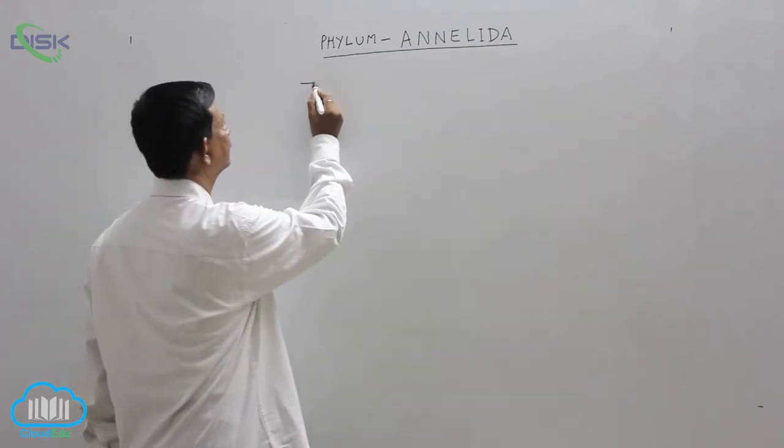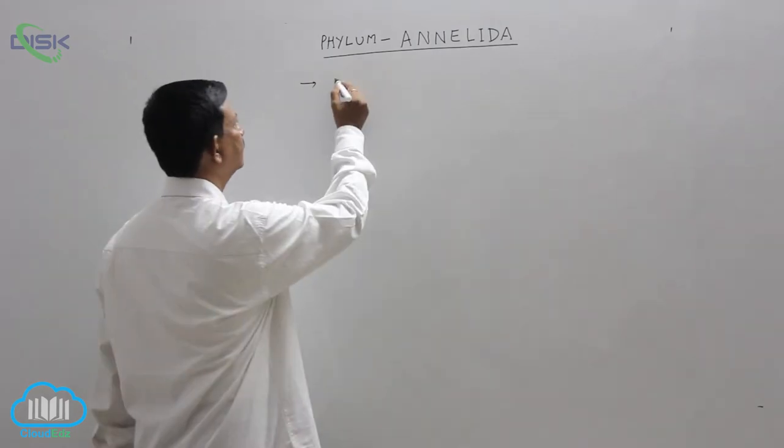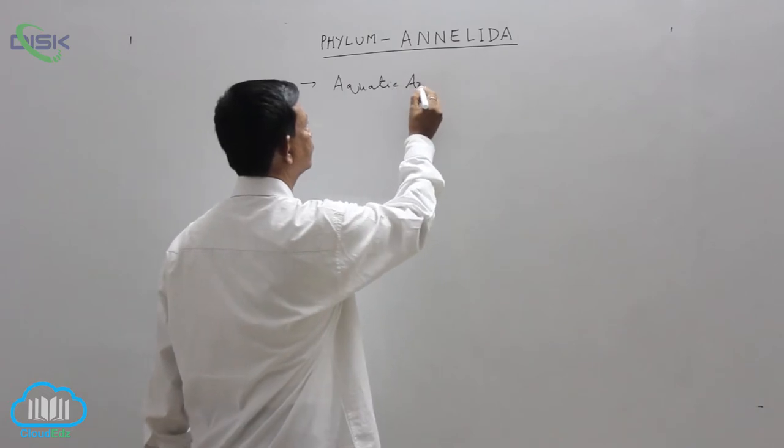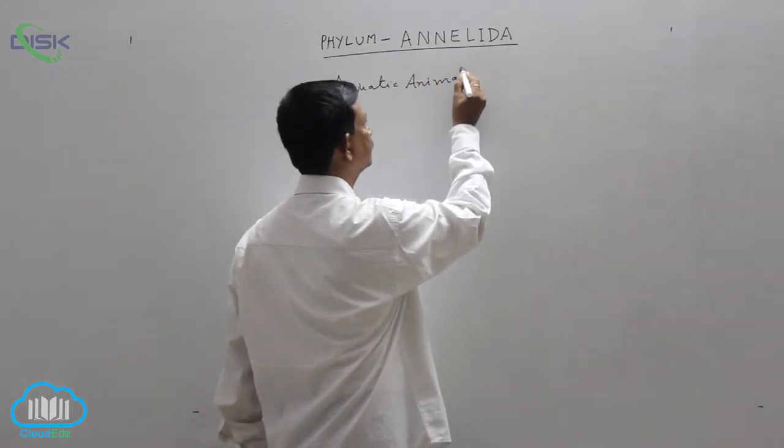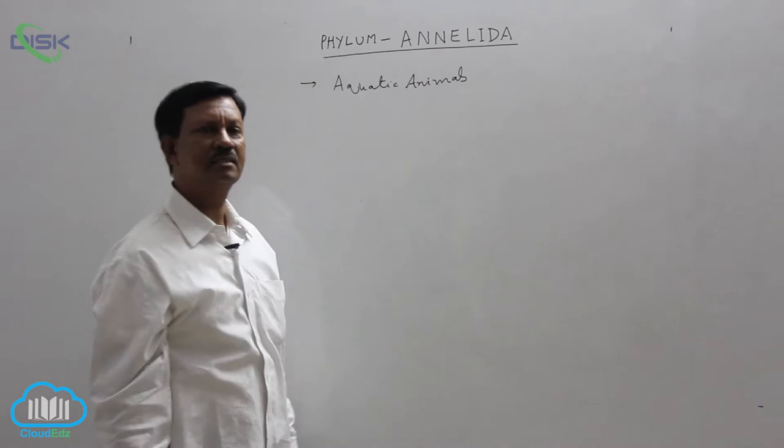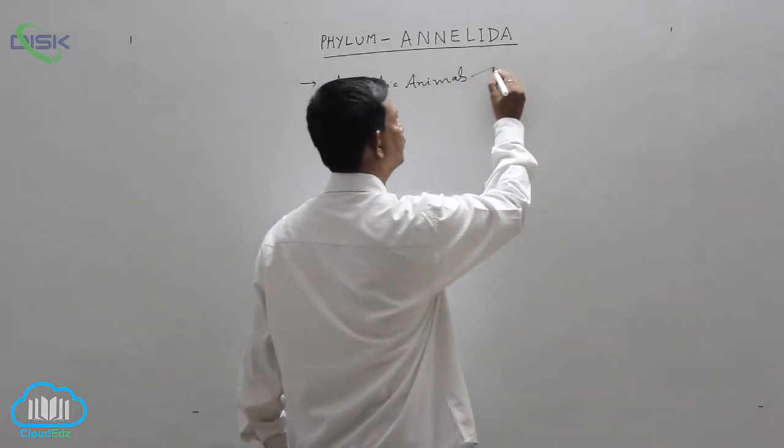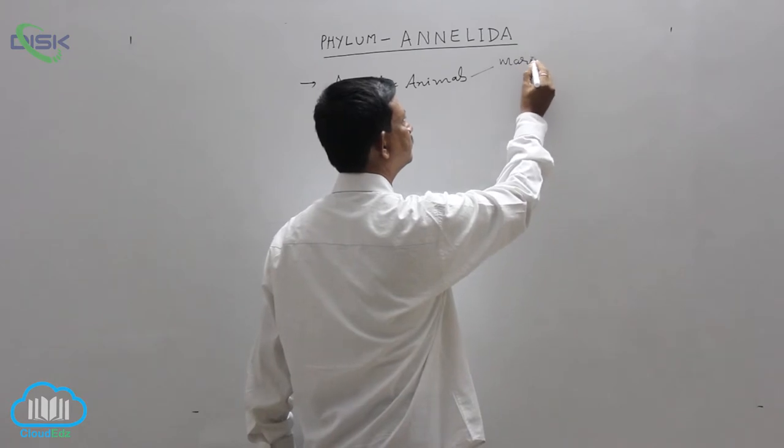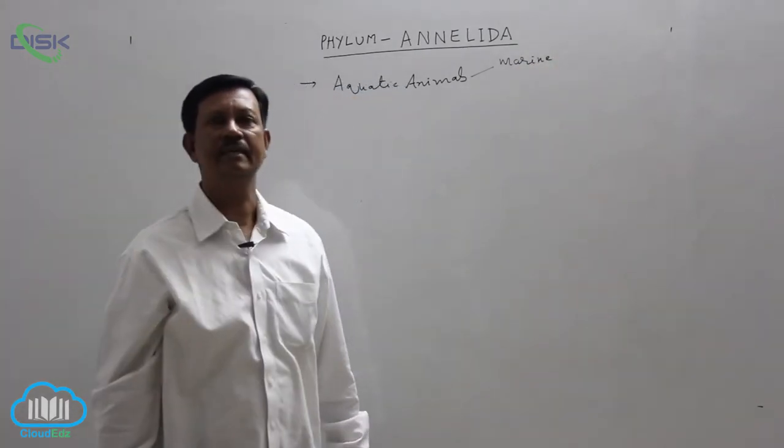The main characters of phylum annelida are, they are aquatic animals. Most of the animals are found in marine water. Example, nereis.